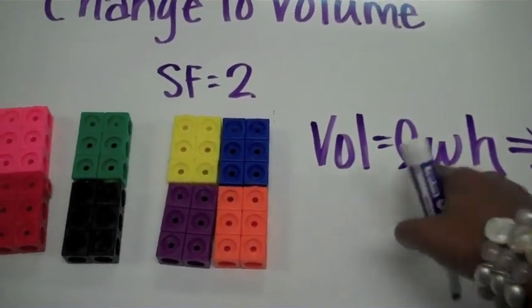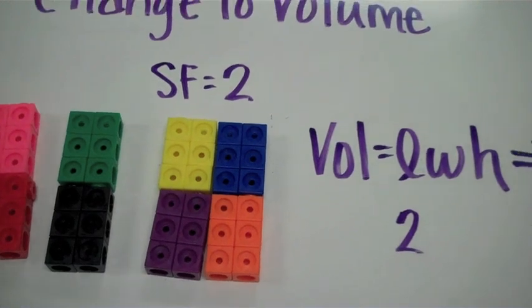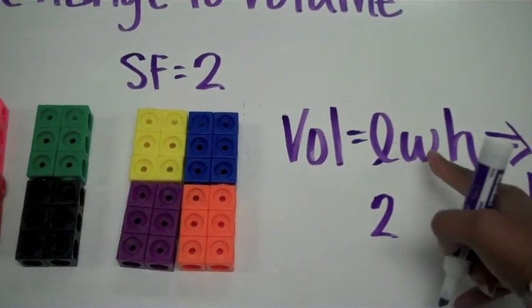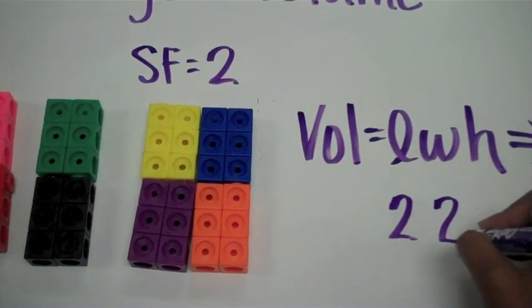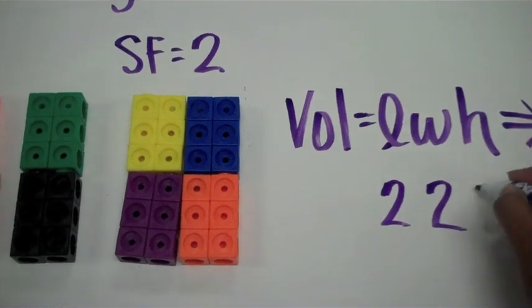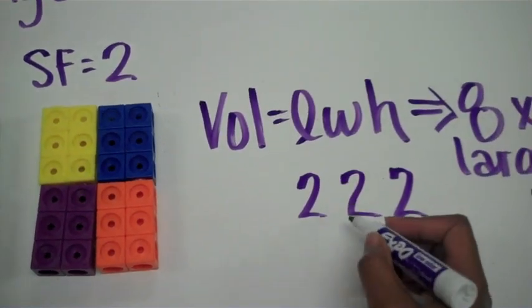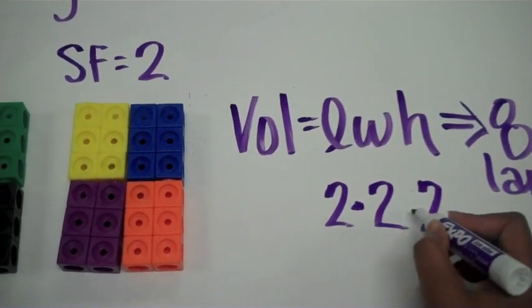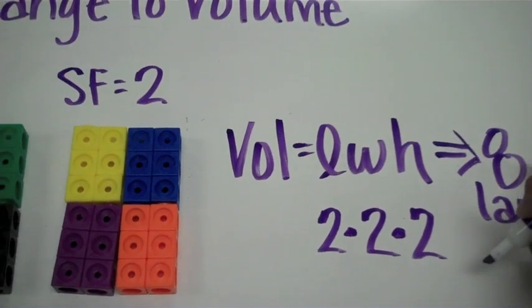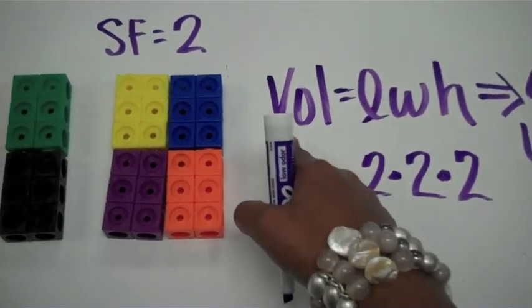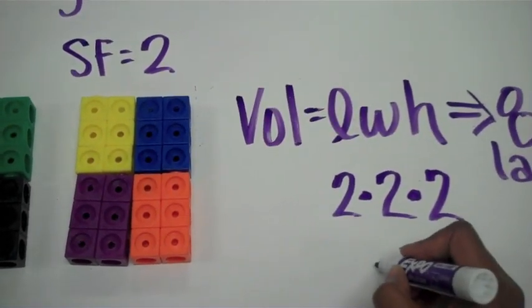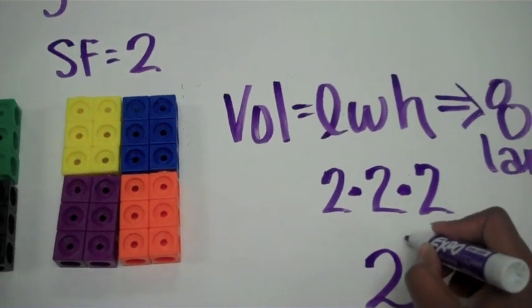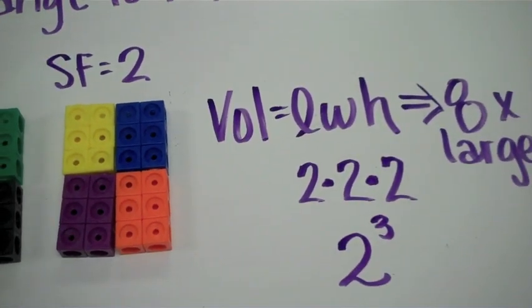Alright, so the length increased by a scale factor of 2. My width I multiplied by 2, and my height I multiplied by 2. Well, I know that 2 times 2 times 2 equals 8. So my volume actually increased by my scale factor to the third power.